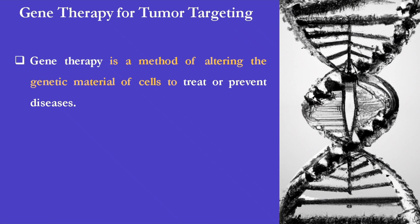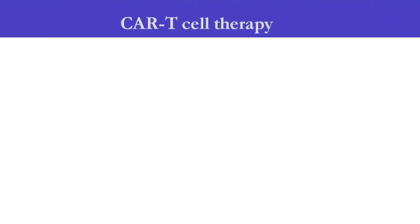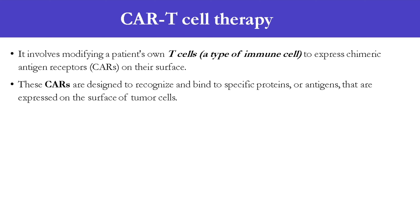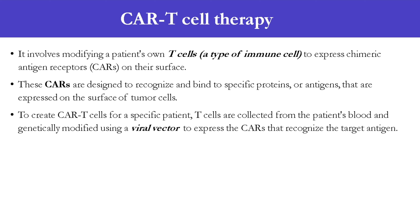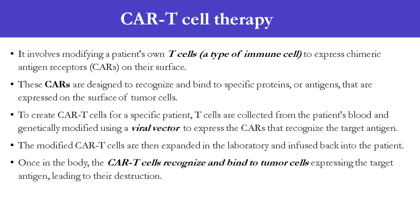Moving on to gene therapy for tumor targeting. Gene therapy is a method of altering the genetic material of cells to treat or prevent diseases. In tumor targeting, gene therapy is used to target cancer cells and induce tumor-specific apoptosis and cell death. An example is CAR T-cell therapy, which involves modifying a patient's own T-cells to express chimeric antigen receptors (CARs) on their surface. These CARs are designed to recognize and bind to specific proteins or antigens expressed on the surface of tumor cells. T-cells are collected from the patient's blood, genetically modified using a viral vector to express the CARs, then expanded in the laboratory and infused back into the patient. Once in the body, the CAR T-cells recognize and bind to tumor cells expressing the target antigen, leading to their destruction.